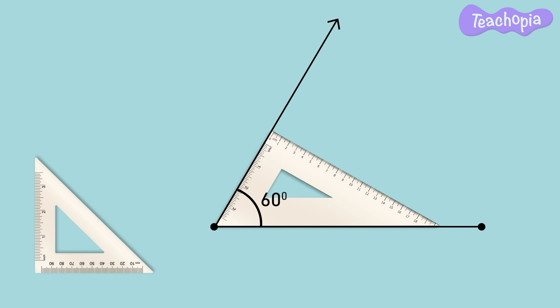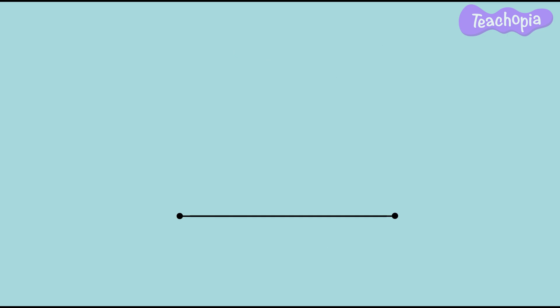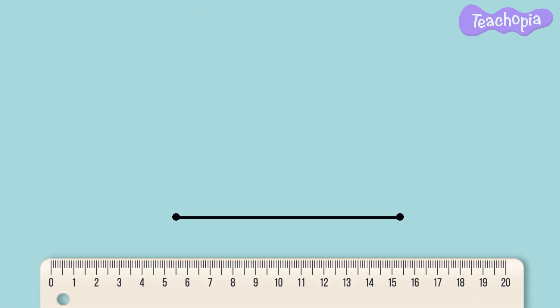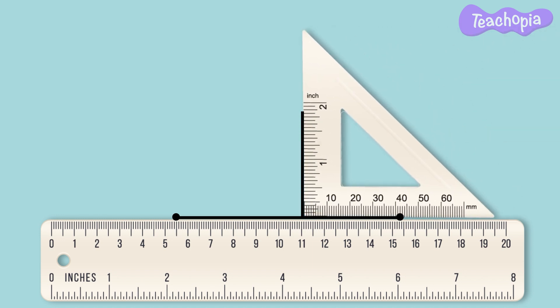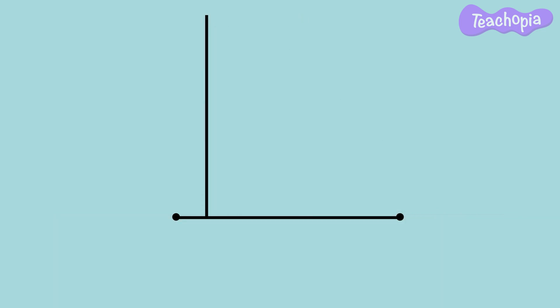This is how set squares make constructing angles very easy. It is also possible to draw 15 degree angles using the set square — try it out. For a given line segment we can draw many perpendicular lines using the set square. Place the scale along the line segment, then place the set square along the scale to get a perpendicular line to the given line segment.